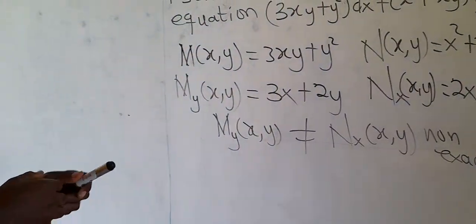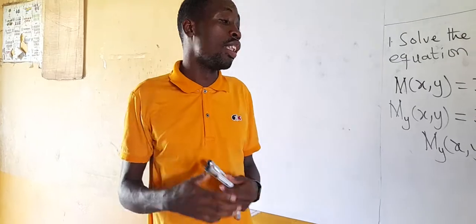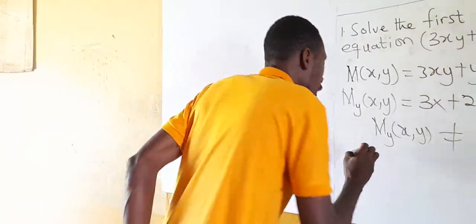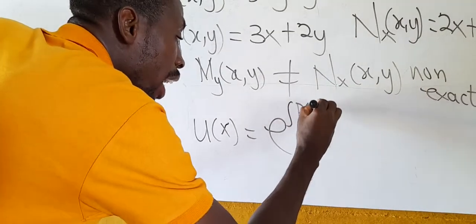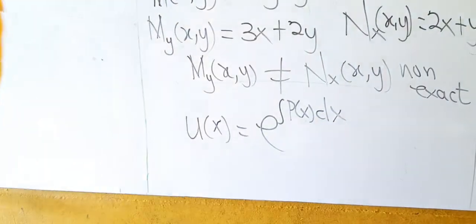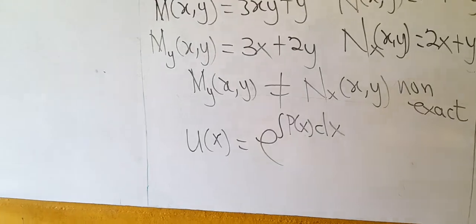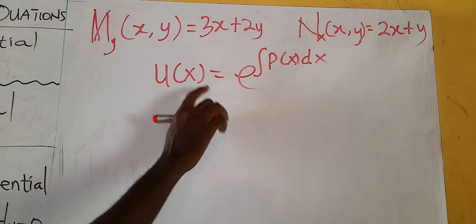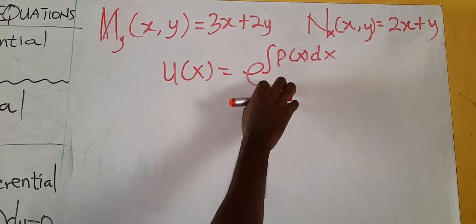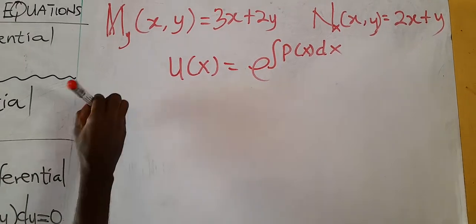Since we've determined it is non-exact, we need to find the integrating factor. The integrating factor U(x) is given as e to the power of the integral of P(x) dx. We now need to find P(x).